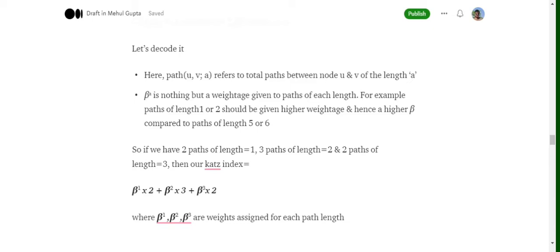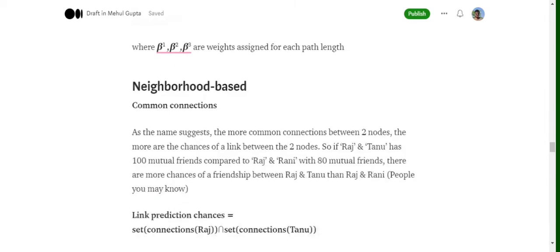Now beta^1, beta^2, beta^3 are the coefficients, the weights that we're assigning to paths. So greater the path length, smaller would be the beta value. So eventually what we're trying to do in this Katz index is we're trying to allocate more weightage to shorter paths as compared to longer paths, but all the paths between two nodes are considered.